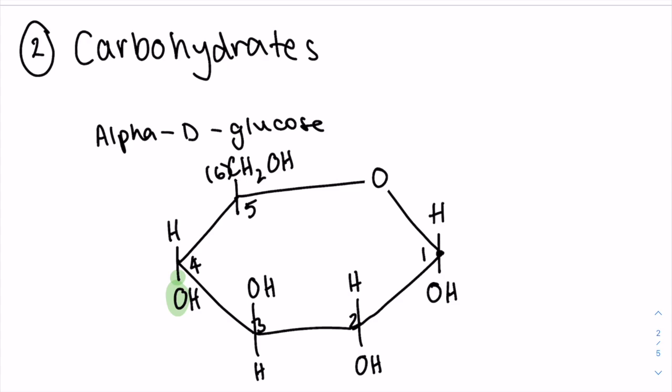It's also important to note that in alpha-D-glucose, the pattern is OH on the bottom, top, bottom, bottom. Because this is different, or the key difference between alpha and beta-D-glucose.